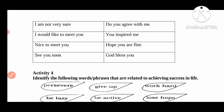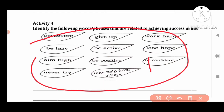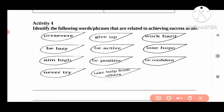This is Activity 3. Next, identify the following words and phrases that are related to achieving success in your life. For example, 'persevere' — it means something difficult but we reach and achieve. 'Give up' — we did not relate this to achieving success, so this word is not related.